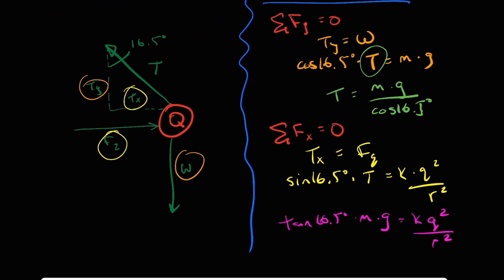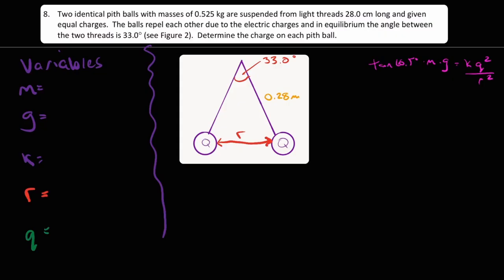Okay, so now before we continue on and rearrange, let us take a step back and ask what do we know and what are we trying to figure out. I'll scroll down to this list of variables that I've already written. We were given the mass for the pith balls of 0.525 kilograms. G, of course, is 9.81 meters per second squared. K is Coulomb's constant. We can look up and find out that it is 8.99 times 10 to the power of 9 newton meters squared over coulomb squared.